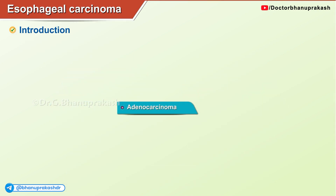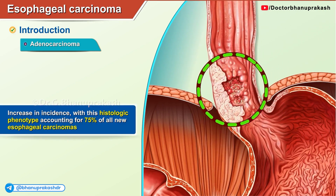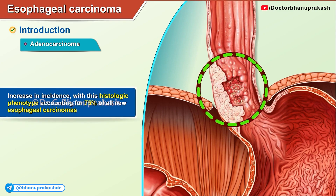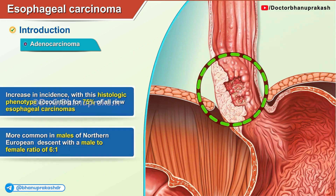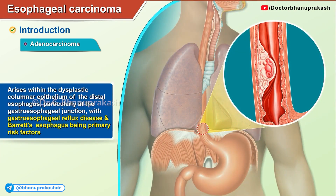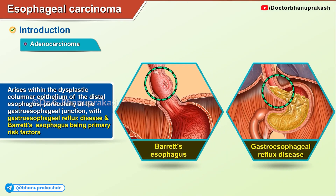Adenocarcinoma has seen an increase in incidence, with this histologic phenotype now accounting for 75% of all new esophageal carcinomas. It is more common in males of North European descent, with a male to female ratio of 6 to 1. It arises within the dysplastic columnar epithelium of the distal esophagus, particularly at the gastroesophageal junction, with gastroesophageal reflux disease and Barrett esophagus being primary risk factors.